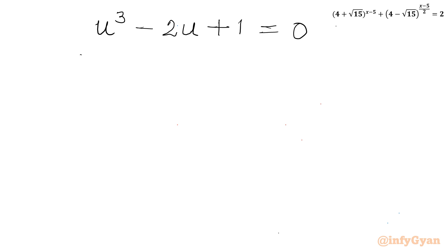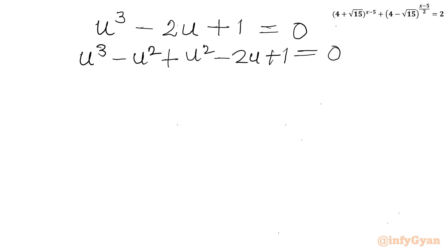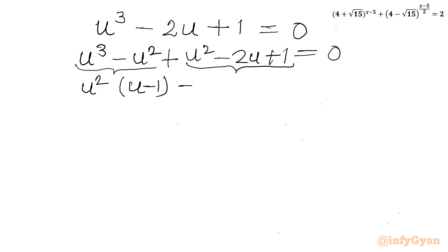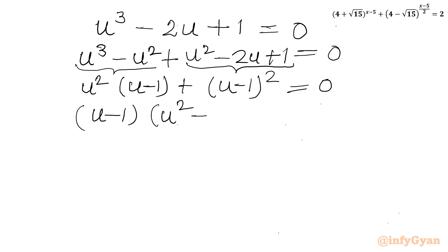I will use the method of factorization. Writing the equation as u³ − u² + u² − 2u + 1 = 0, we see that u²(u − 1) is a common factor, and the remaining three terms give a perfect square (u − 1)². Taking (u − 1) common: (u − 1)(u² + u − 1) = 0.